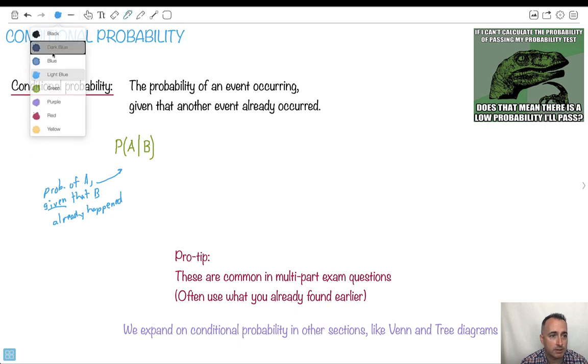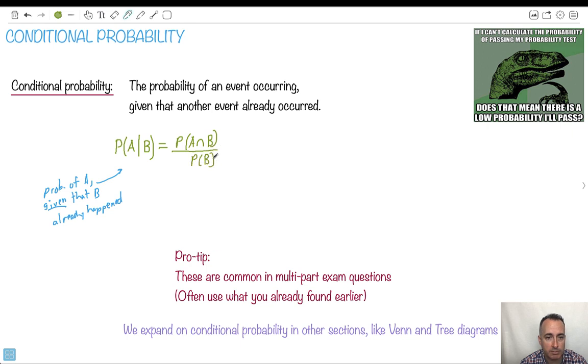So it equals, and let's just look at what it says here. It says probability of A and B. So I'm writing it like this. Divide that by probability. Whoa, that's a bad division. There we go. Probability of B. This is the equation. This is what we need here.